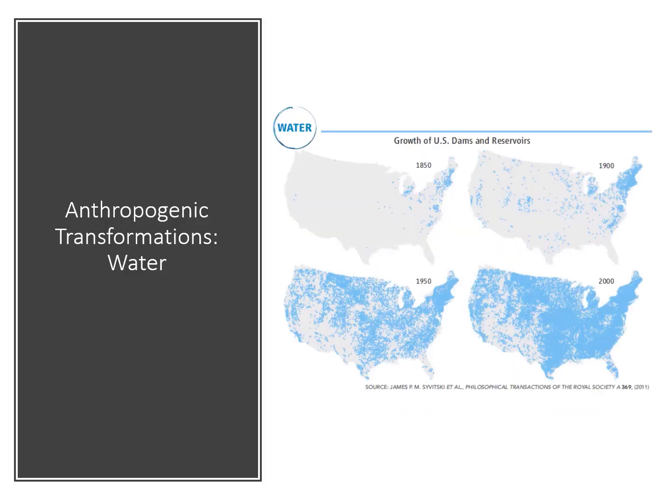Humans have also altered Earth's hydrology, diverting and damming rivers. This series of maps shows the additions of dams and reservoirs from 1850 to 2000 in the U.S. Today, the U.S. has almost no unmodified river systems left. Think about the changes illustrated here and in the previous slides — how could they alter the Earth's climate?